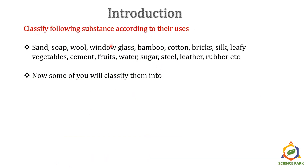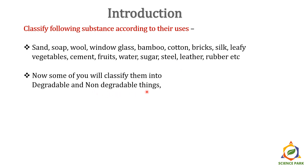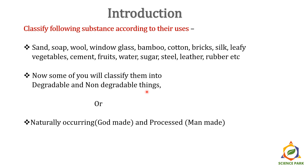Consider this list of substances: sand, soap, window glass, bamboo, cotton, bricks, silk, leafy vegetables, cement, fruits, water, sugar, steel, leather, rubber, and so on. All these substances you usually observe around you in your daily routine. Now, how can you classify these substances? Some of you will classify them into degradable and non-degradable substances, or into naturally occurring (god-made) and processed or man-made substances, or into eatables and non-eatables.